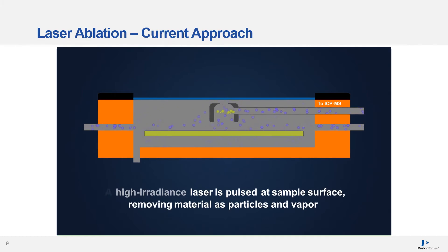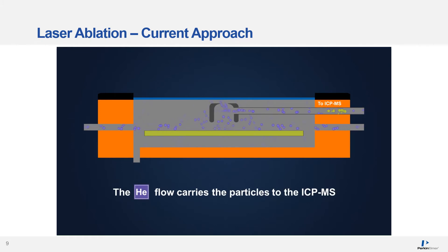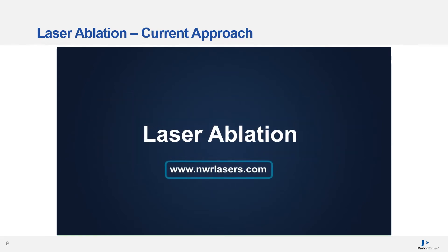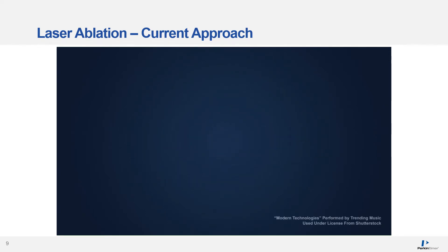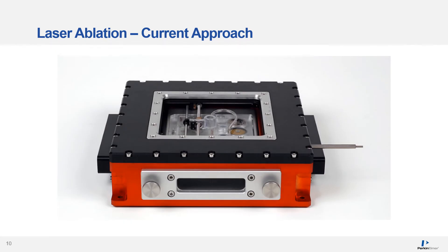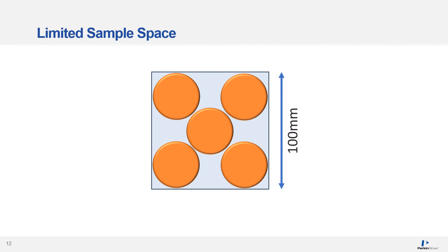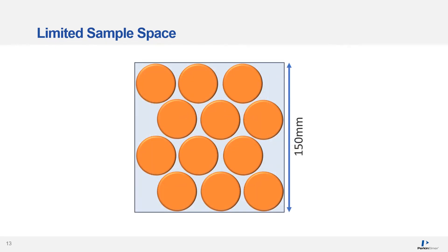This video shows the current approach. Furthermore, this laser ablation box or chamber limits the number of samples in any given batch. Here are some typical 40 mm X-ray fusion beads. With those 40 mm beads, a standard ablation chamber of 100 mm can only fit 5 of the beads. If we went to a larger 150 mm chamber, you could fit more, but this comes at a cost of extending the chamber purge times, impacting the true throughput of the system.